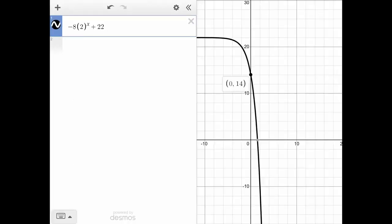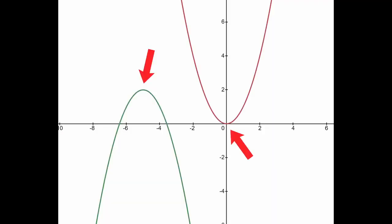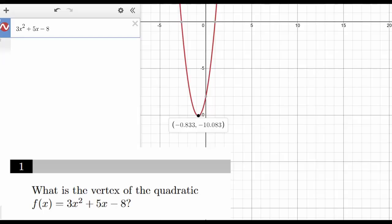Then there's the vertex of a quadratic. The vertex is basically the end of a quadratic. It's the minimum or the maximum. And it's very easy to find if you plug the quadratic into Desmos and then click on it. That's it.